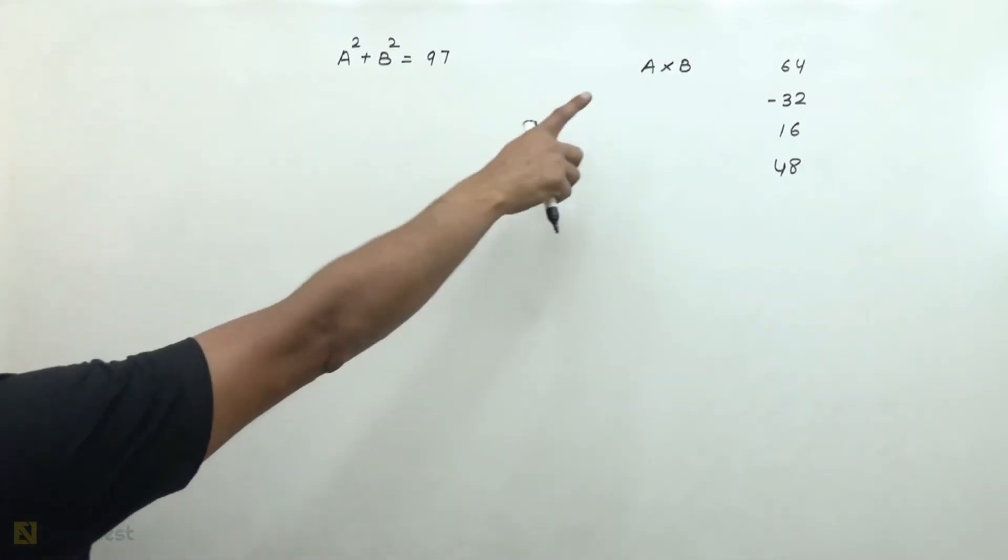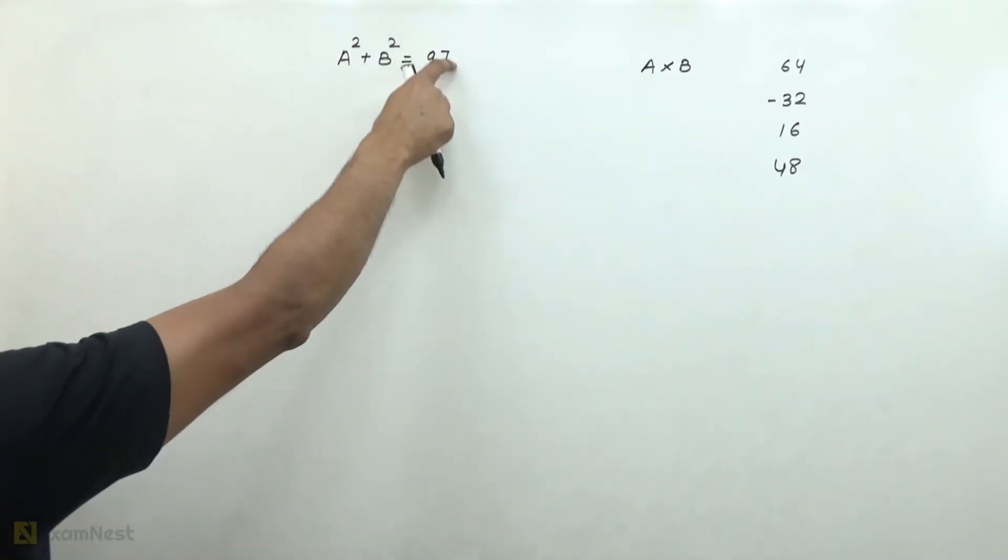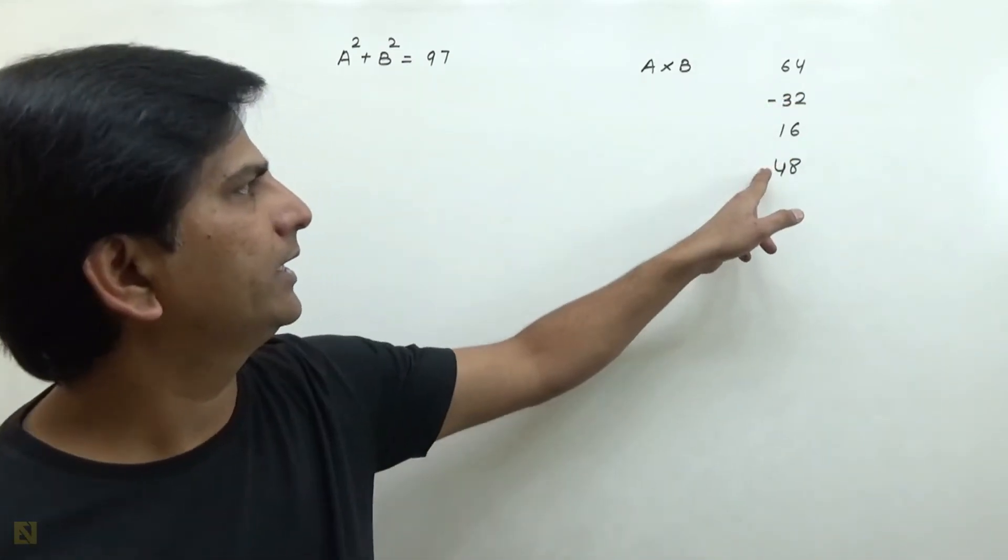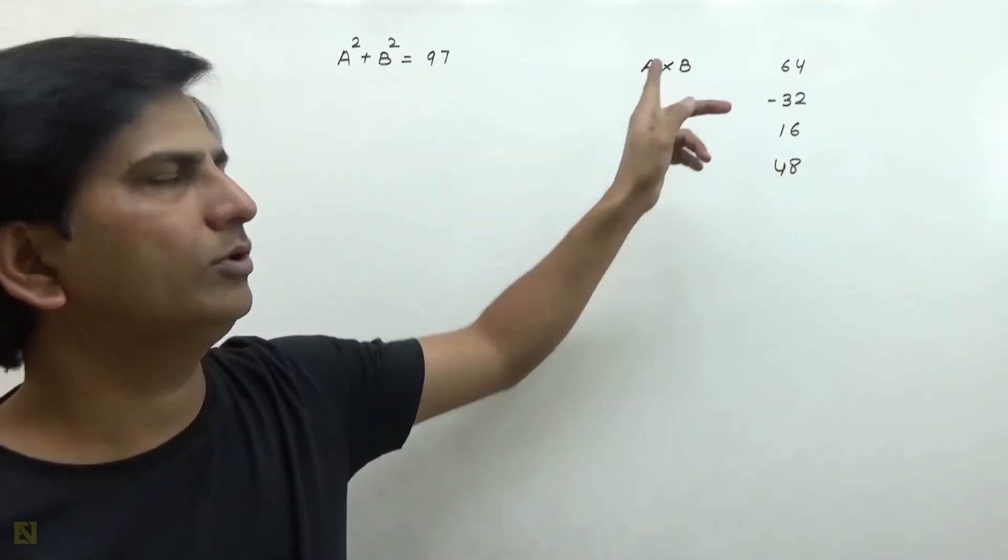There are two numbers A and B, and the sum of squares we have given is 97. We have to determine which one of the options cannot be their product.